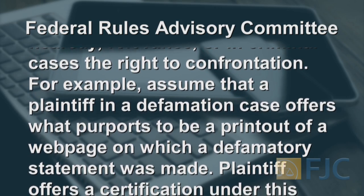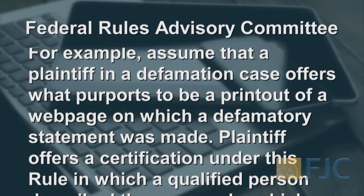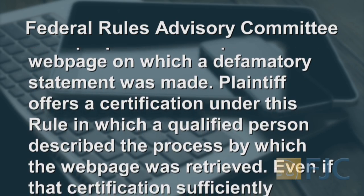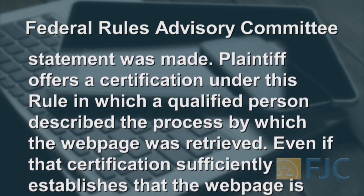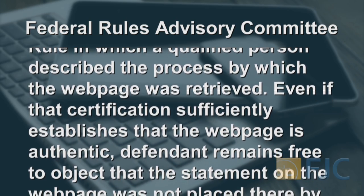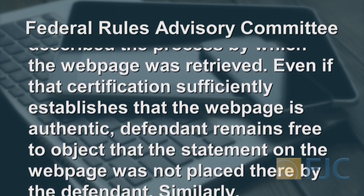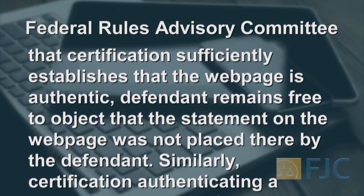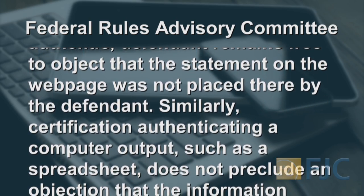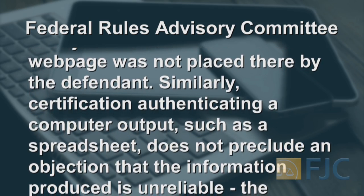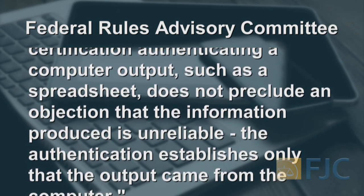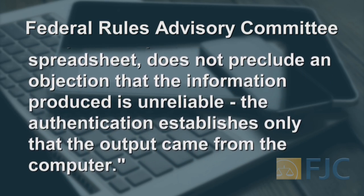For example, assume that a plaintiff in a defamation case offers what purports to be a printout of a web page on which a defamatory statement was made. The plaintiff offers a certification under this rule in which a qualified person described the process by which the web page was retrieved. Even if that certification sufficiently establishes that the web page is authentic, the defendant remains free to object that the statement on the web page was not placed there by the defendant. Similarly, a certification authenticating a computer output, such as a spreadsheet, does not preclude an objection that the information produced is unreliable. The authentication establishes only that the output came from the computer.